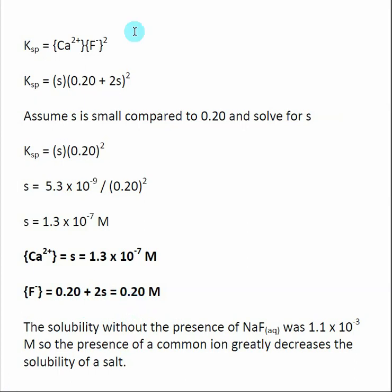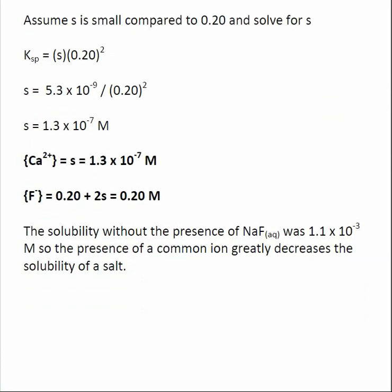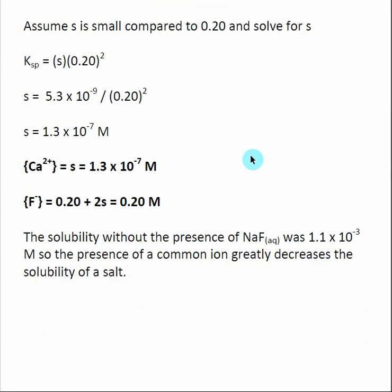To illustrate how the presence of a common ion affects solubility: the solubility of calcium fluoride without sodium fluoride present would have been 1.1 × 10⁻³ M. With the common ion F⁻ present, the solubility drops to 1.3 × 10⁻⁷ M. You can see that having a common ion present greatly decreases the solubility of a salt — and that's what we've shown here.